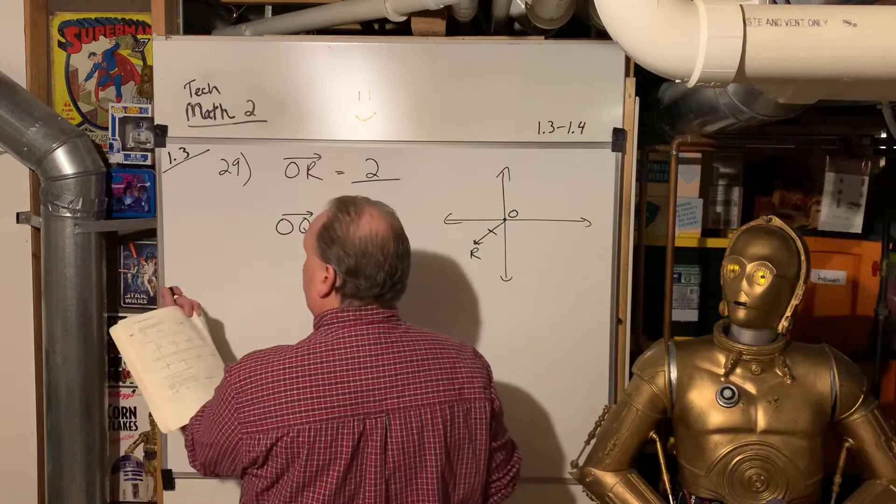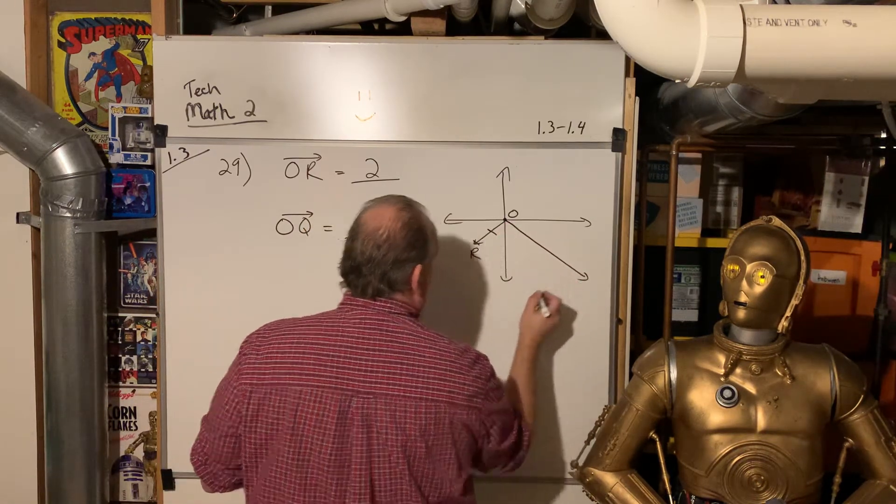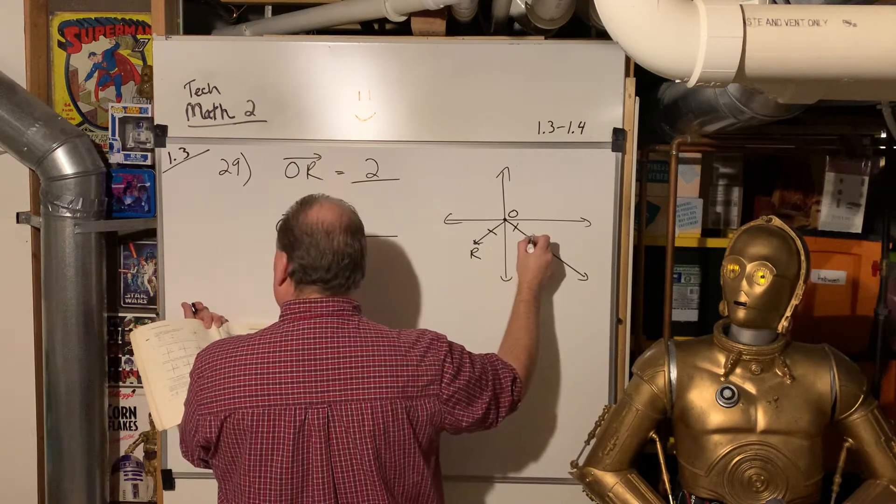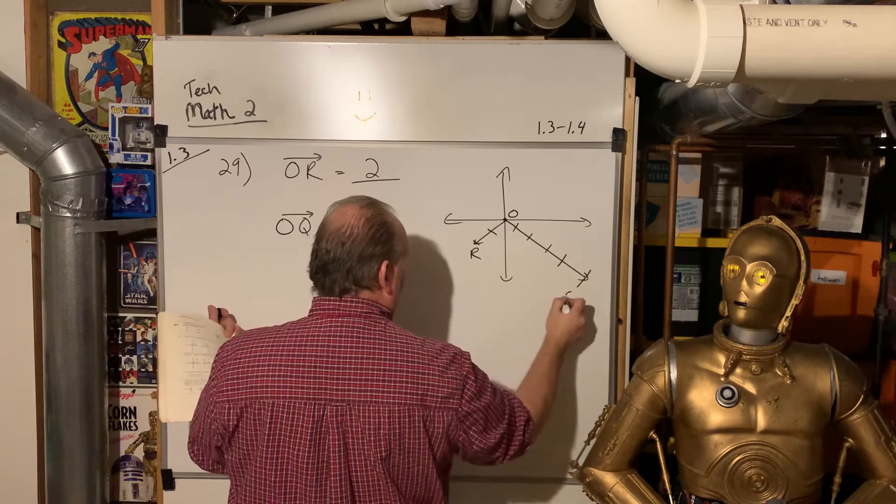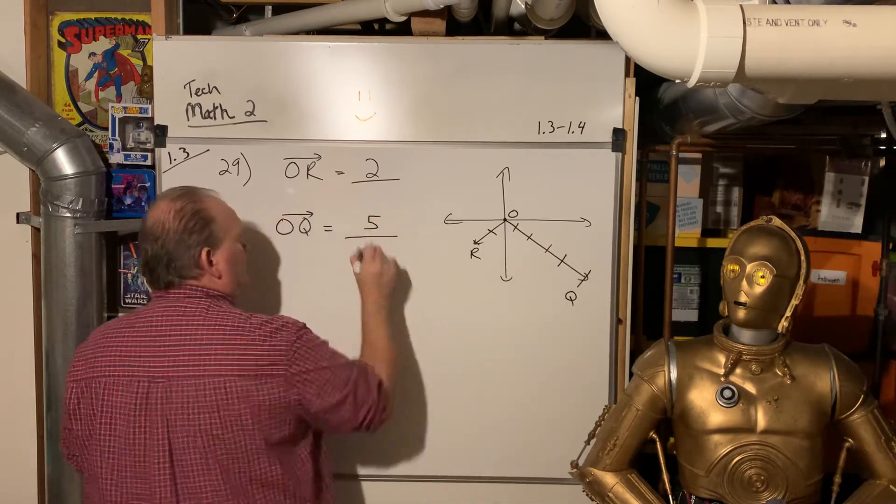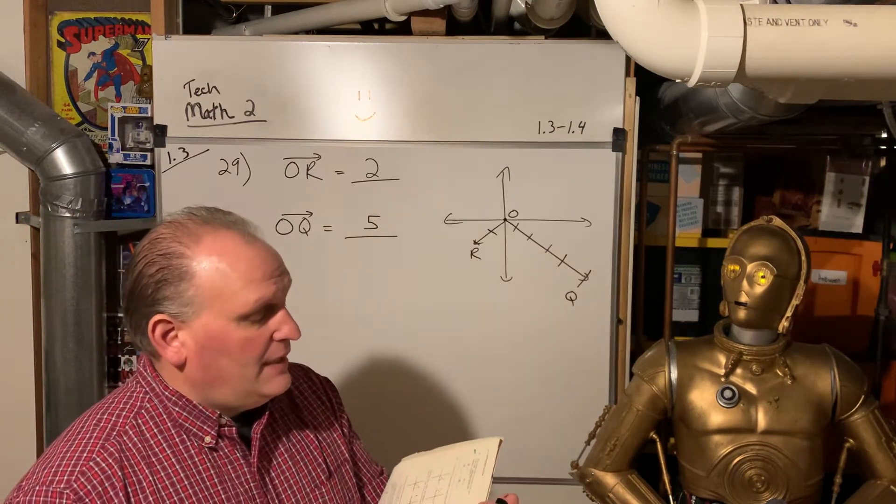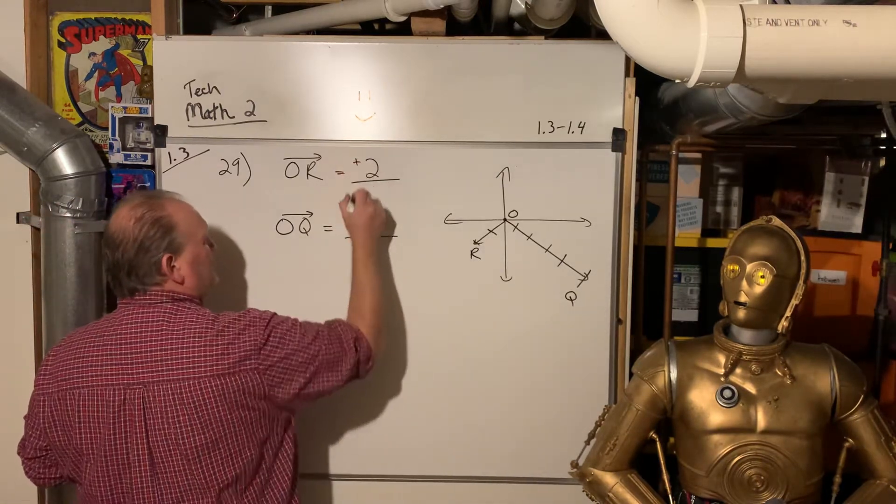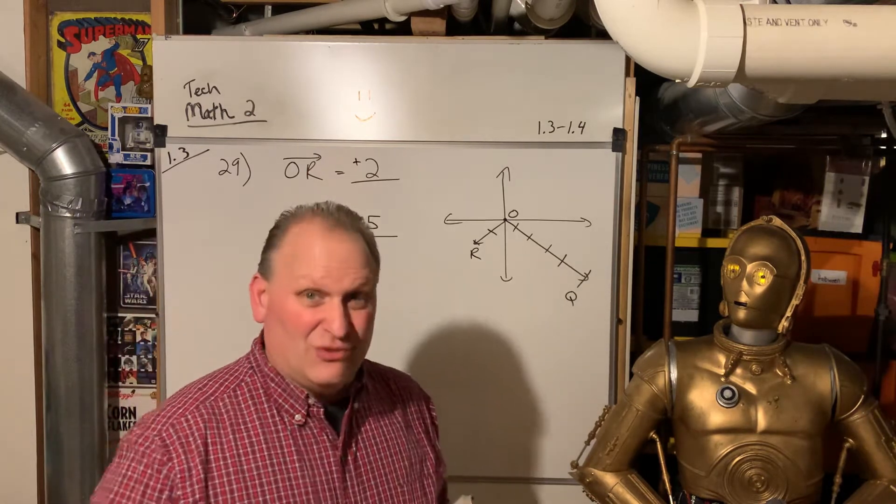So look at OQ. That looks like a railroad track. Let's count the hack marks. So 1, 2, 3, 4, 5. So that's got a distance of positive 5. I guess you can put the plus there. In math, we're super lazy about that, where if there isn't anything there, we assume plus.